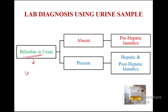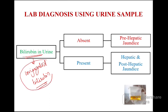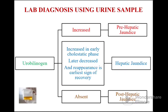Detection of bilirubin in urine means detection of conjugated bilirubin. If conjugated bilirubin is present in urine, that indicates the cause as hepatic or post-hepatic jaundice. If it is absent, the cause is pre-hepatic jaundice.